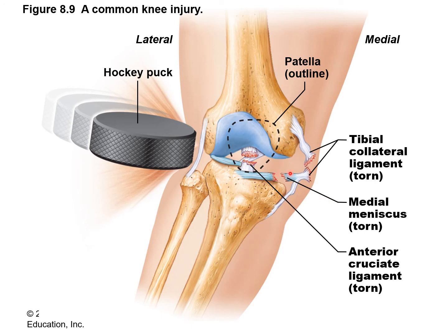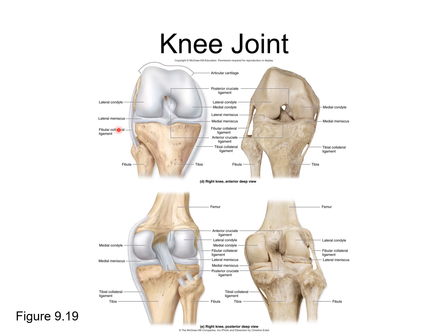ACL repair involves taking a ligament or tendon graft from another part of the patient's body or from a cadaver. Titanium plates may also be used if the injury is severe, as titanium won't rust inside the body. The meniscus (fibrocartilage disc) can also be damaged in knee injuries. The posterior cruciate ligament (PCL) is visible from the posterior view; when overlaid with the ACL, they form a cross shape, explaining the term cruciate.